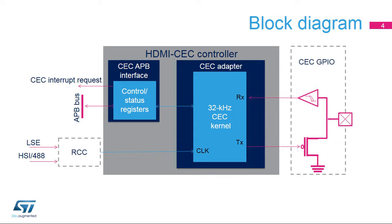The controller consists of a CEC adapter and a CEC Advanced Peripheral Bus (APB) interface. The CEC adapter provides functions such as frame decoding and checking, while the CEC APB interface manages the control and status registers, data in-registers and data out-registers, and synchronous interrupt requests.